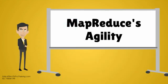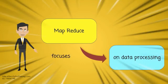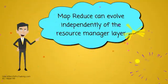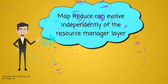MapReduce's Agility. MapReduce is now independent of resource management, as this role is now taken up by YARN. MapReduce solely focuses on data processing. It is now more agile in terms of evolving independently of the underlying resource manager layer.